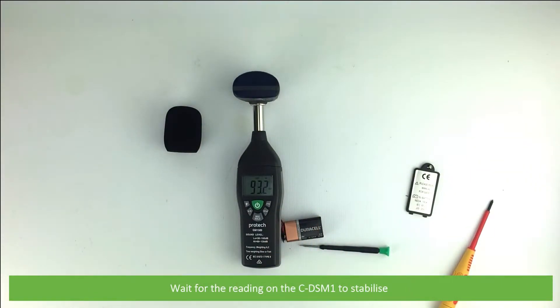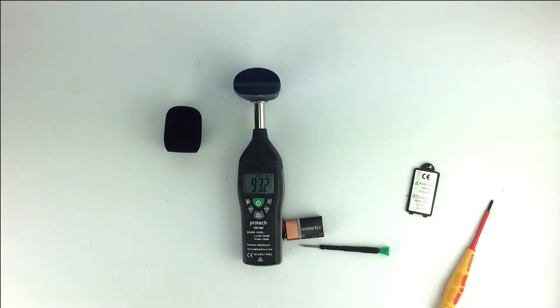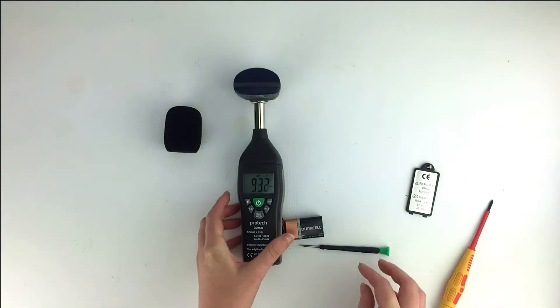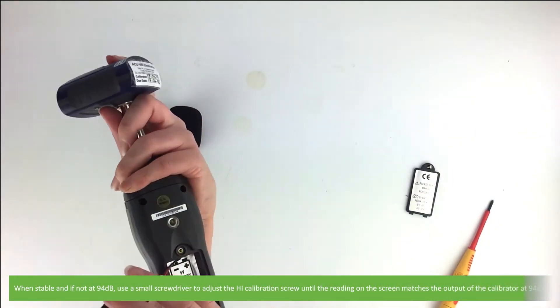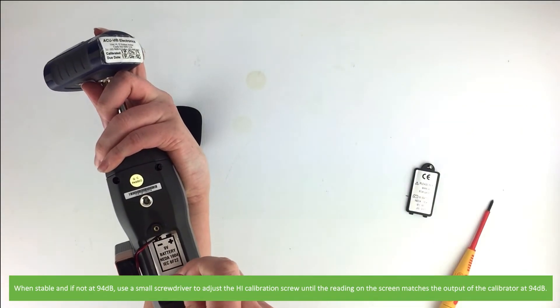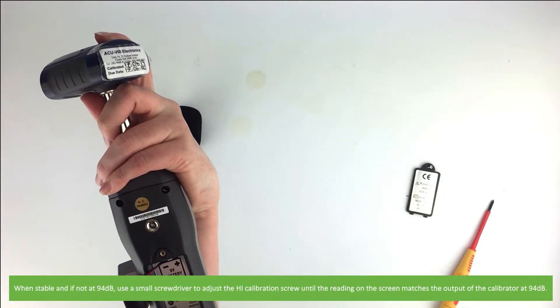Wait for the reading on the CDSM1 to stabilize. When stable and if not at 94 decibels, use a small screwdriver to adjust the high calibration screw until the reading on the screen matches the calibrator's output of 94 decibels.